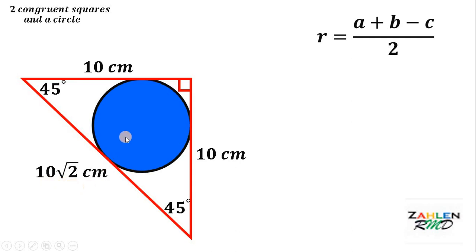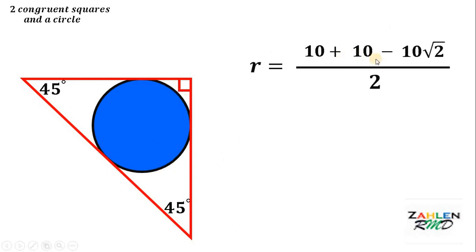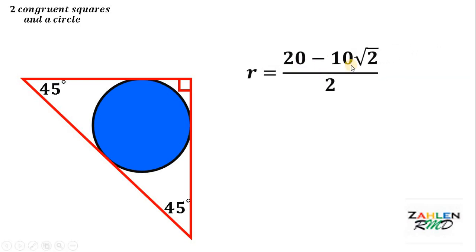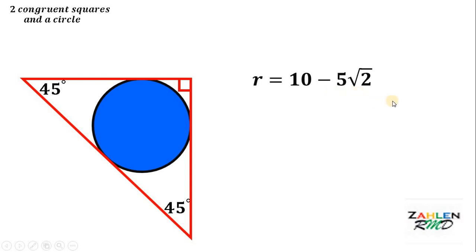Therefore, the radius of the circle inside of it must be equal to 10 plus 10 minus 10 square root of 2, divided by 2. Simplifying, 10 plus 10 is 20, so we have 20 minus 10 times square root of 2, divided by 2. Simplifying again, we get that the value of r must be equal to 10 minus 5 times square root of 2.